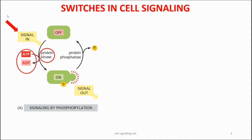There are different groups of protein kinases which are activated in response to specific signaling pathways. For example, protein kinase A is activated in GPCR-mediated cAMP signaling. Protein kinase C is activated in response to calcium. Protein kinase B is activated in RTK signaling.